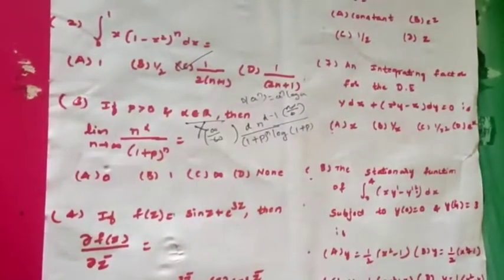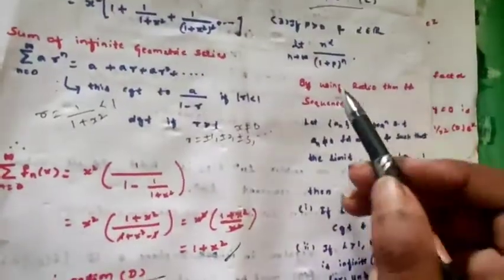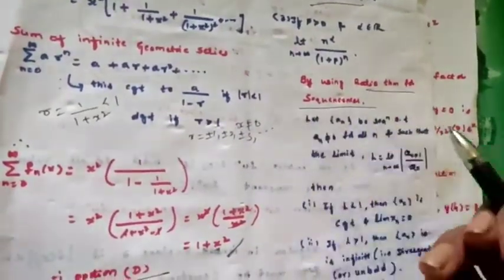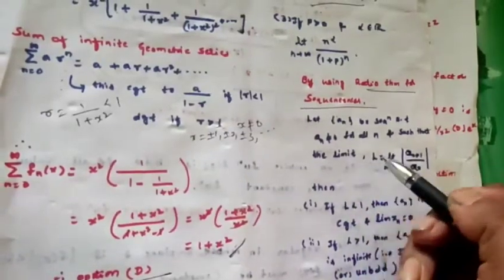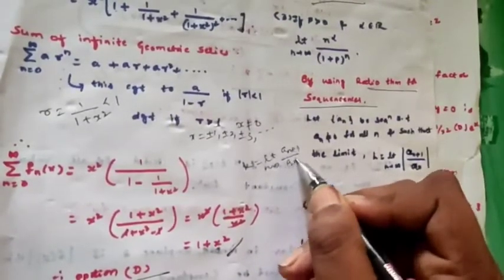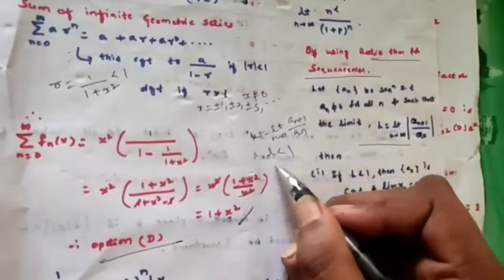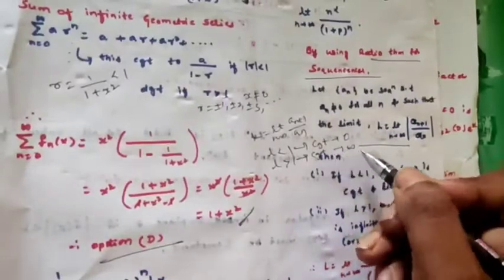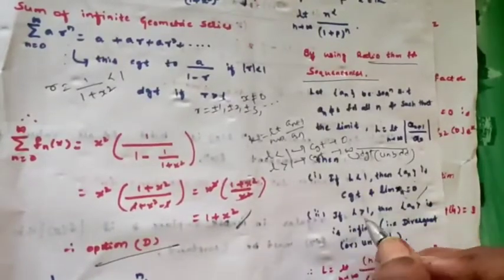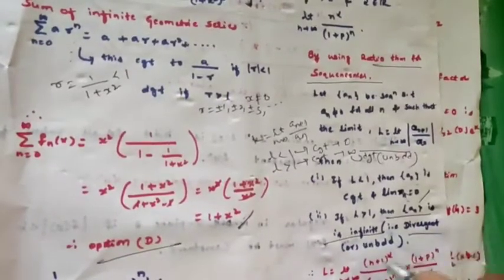This problem is connected with the sequence concept. We apply the ratio theorem for sequences directly. Let a_n be a sequence such that a_n ≠ 0 for all n, and let l = lim(n→∞) a_{n+1}/a_n. If l < 1, the sequence converges to 0. If l > 1, the sequence a_n diverges or is unbounded.